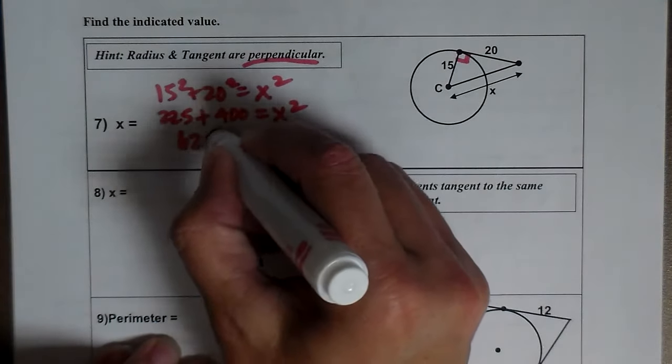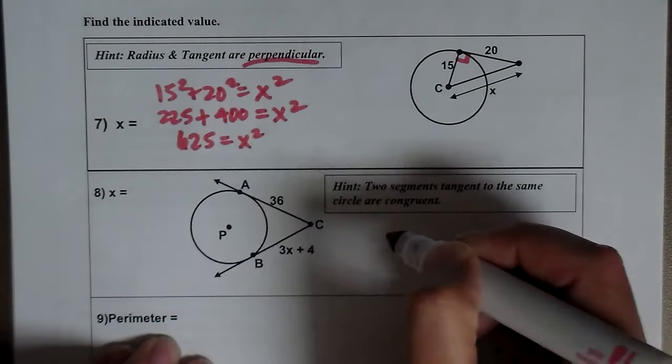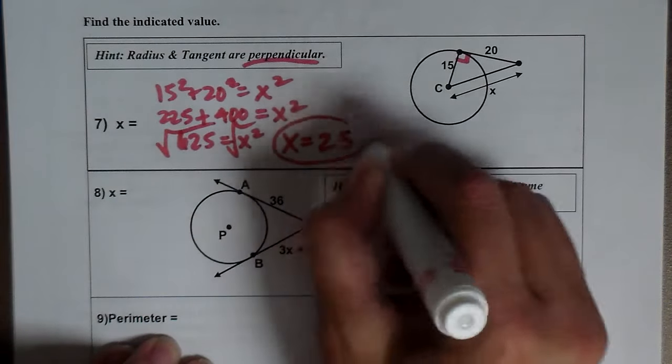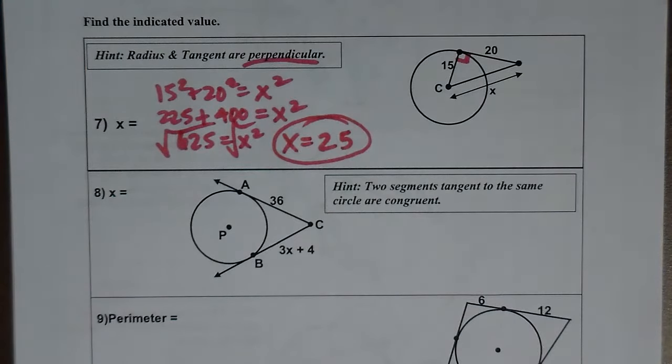so 625 equals x squared, and then I square root both sides to find x, so x is 25. Pretty simple. It's all Pythagorean Theorem.